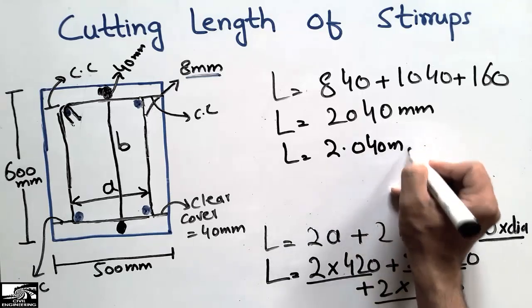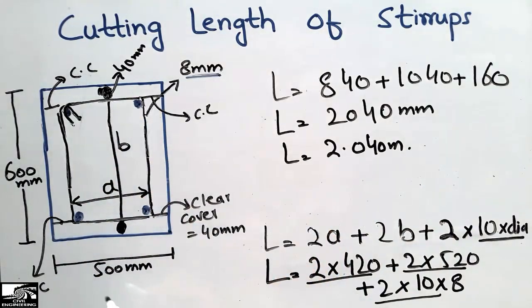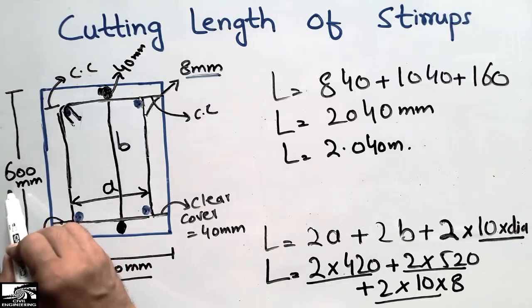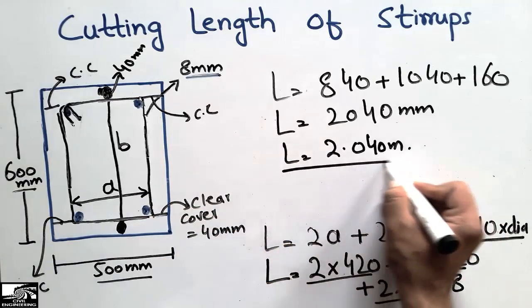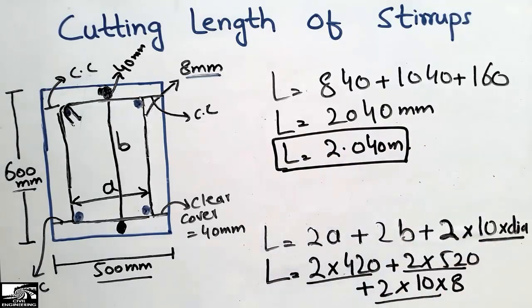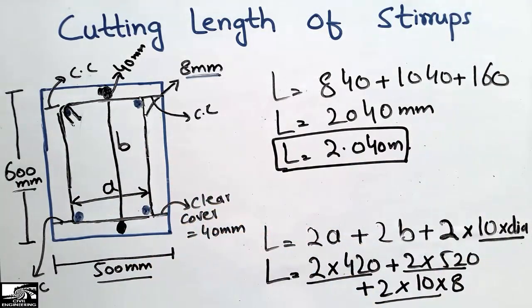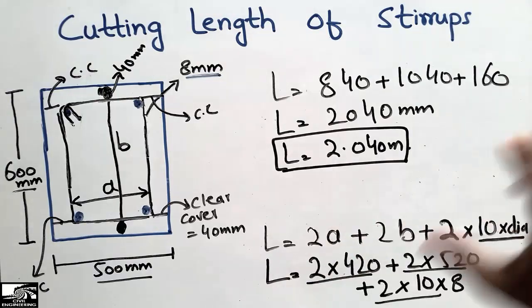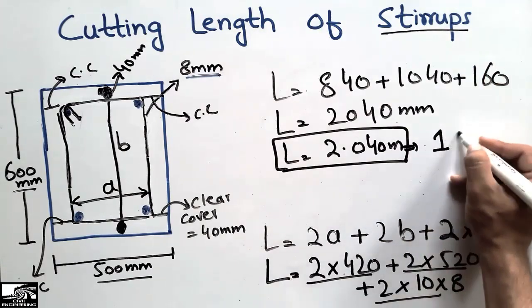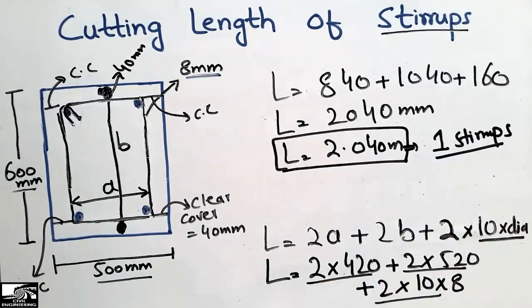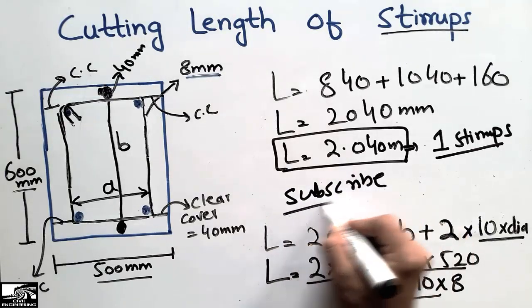So the cutting length of the stirrups for this beam cross-section — 500 mm wide, 600 mm deep, with 40 mm clear cover — comes out to 2.04 meters. This is the length of one stirrup. You can multiply this by the number of stirrups used to get the total length. Hope you guys understand, and don't forget to subscribe to our channel. Thank you for watching.